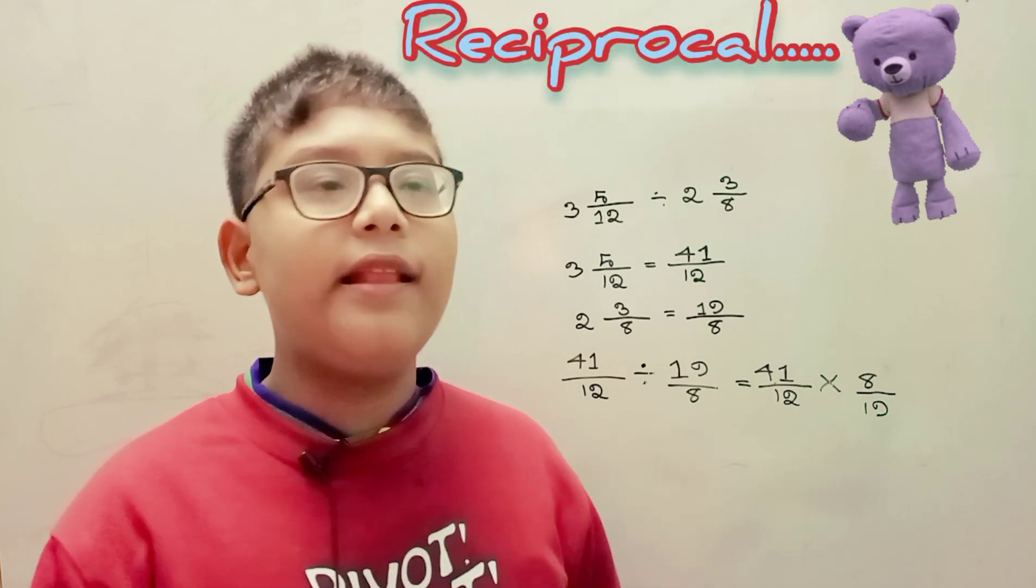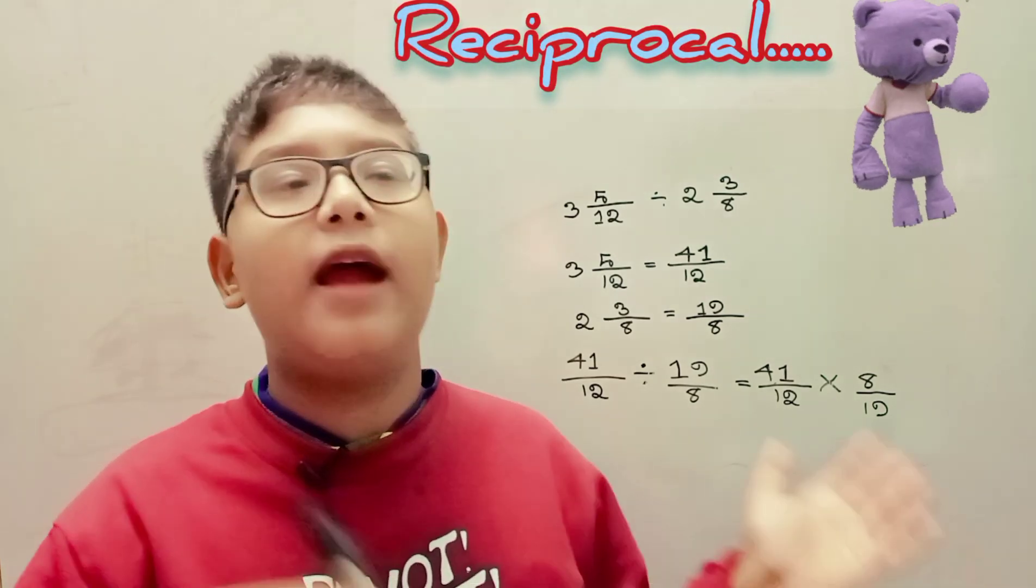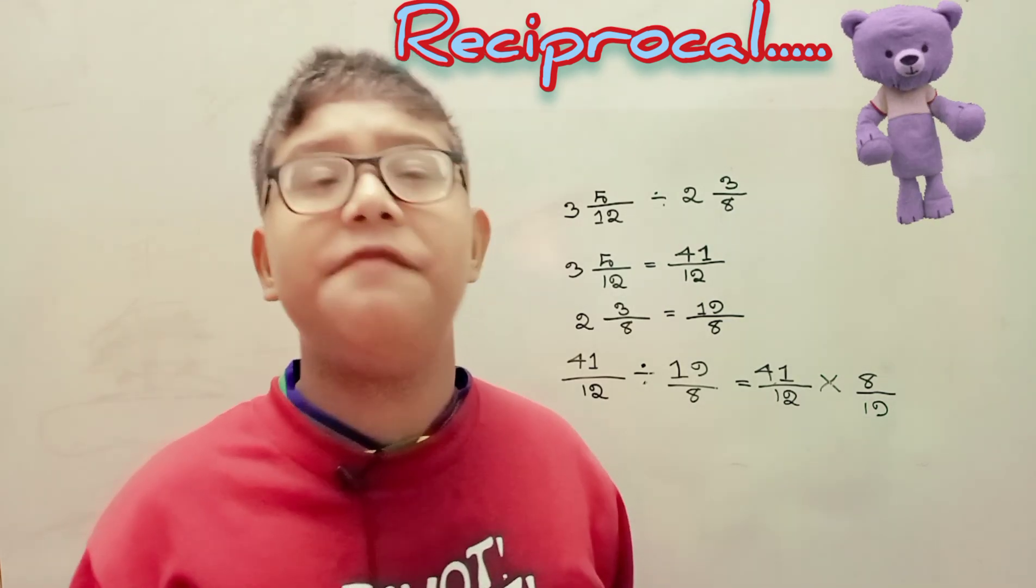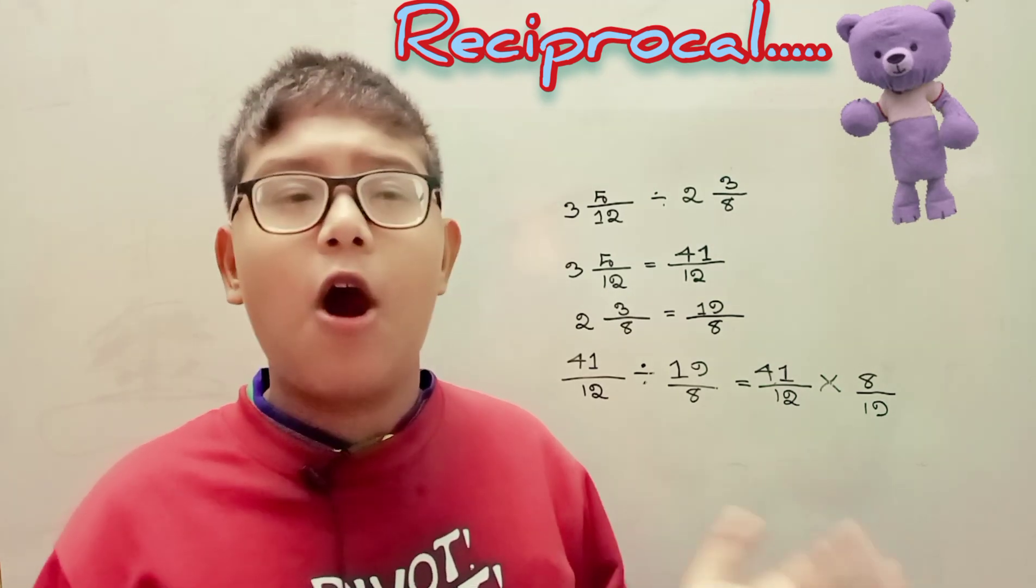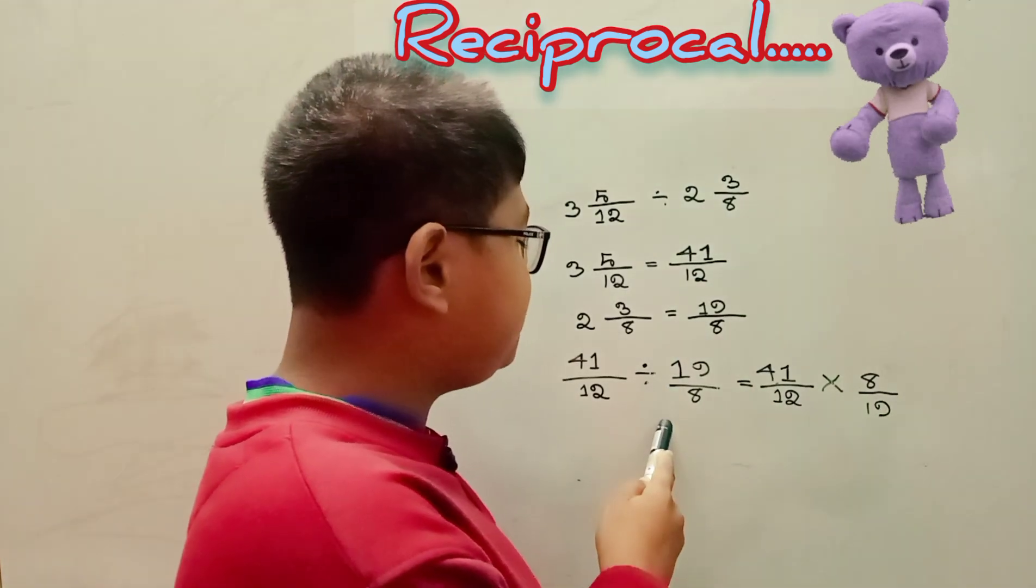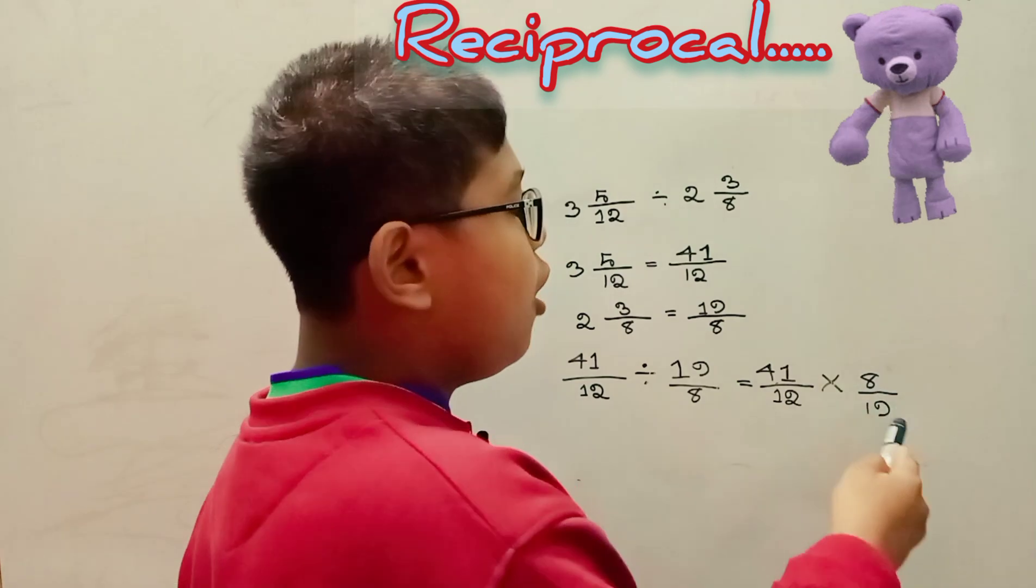In math, reciprocal is simply defined as the inverse of a value or a number. The reciprocal of a number is 1 divided by that number. For fractions, flip the whole fraction over. Here we flip the fraction 19 over 8 to 8 over 19.